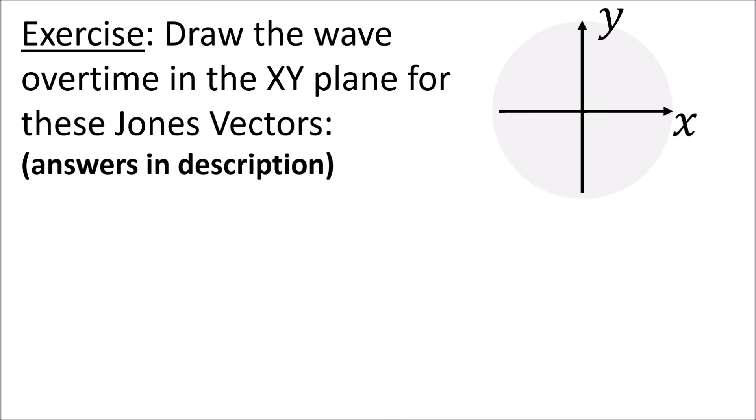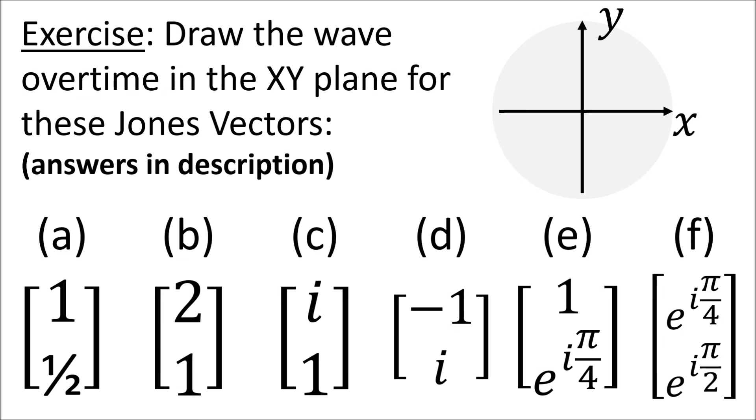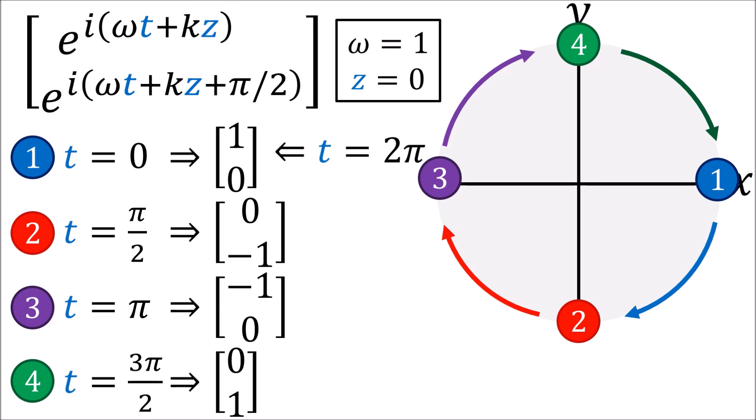In the meantime, before the next video, I'd suggest trying to draw out the shapes of various polarizations for the Jones vectors shown on the screen here. If you feel confused, just use the strategy I showed earlier of taking z equals zero and omega equals one and plugging in different time values to see how the wave moves around in the xy plane. The answers are linked in the description.